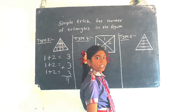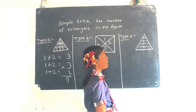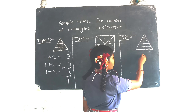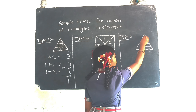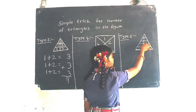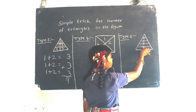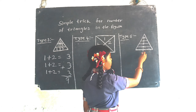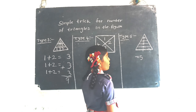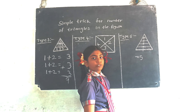Type 5 is very easy — just count all the triangles directly. Counting: 1, 2, 3, 4, 5. Number of triangles is 5.